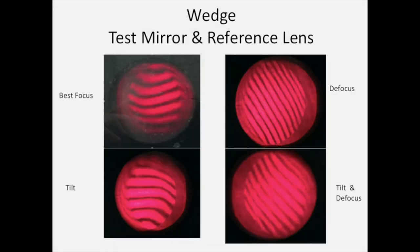Next we used a wedge plate to analyze a test mirror. You can see even at best focus there was still some spherical aberration. When we added defocus, the fringes rotated at some angle. When we added tilt, there wasn't much difference from the best focus. When we added tilt and defocus, it looks pretty much the same as the image with just defocus.